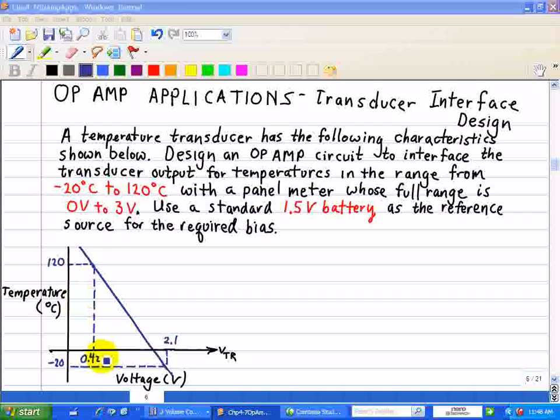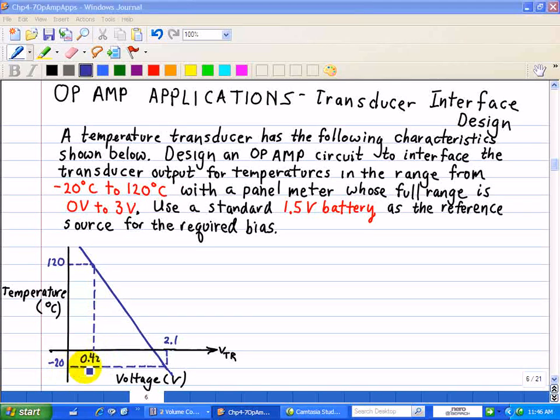With a panel meter whose full range goes from 0 to 3 volts, and we want to use a standard 1.5 volt battery as the reference source for the required bias. So that's our example.